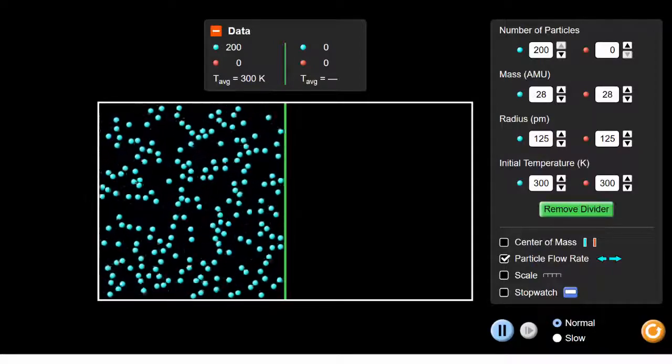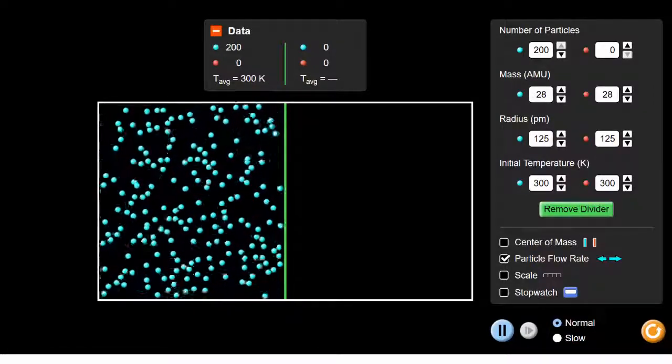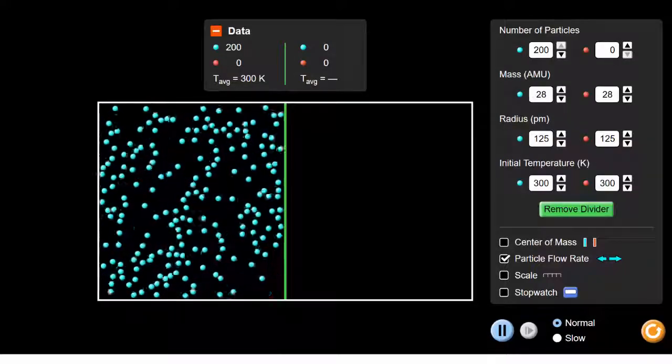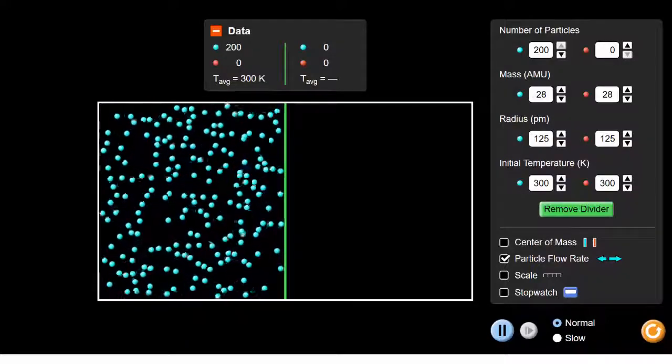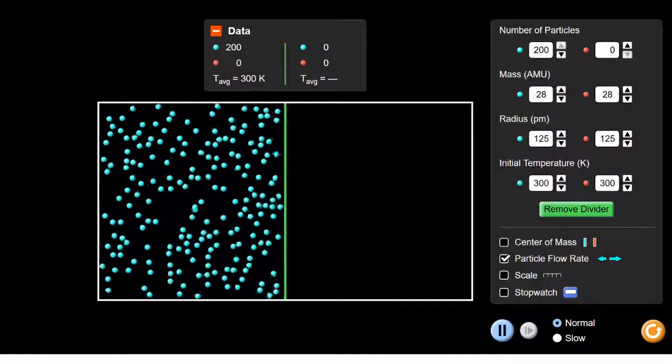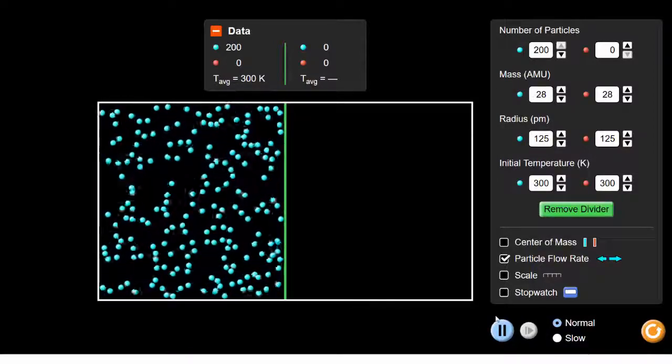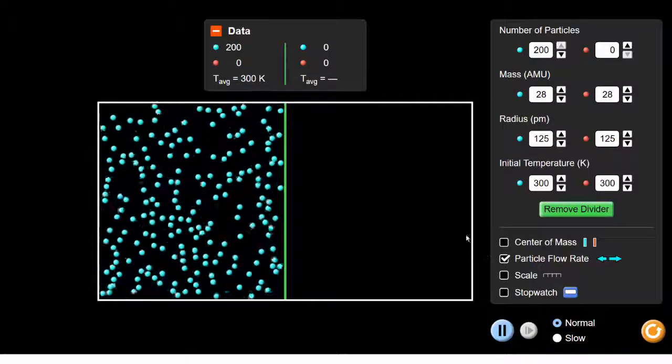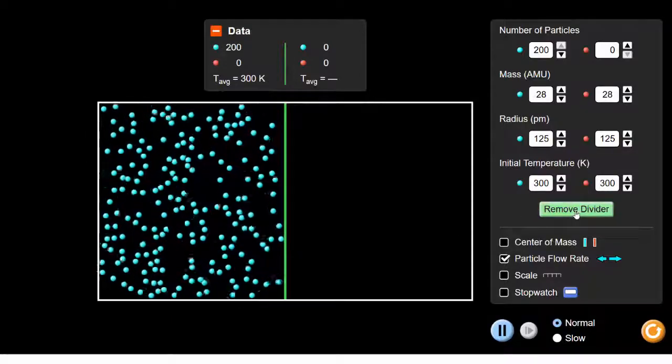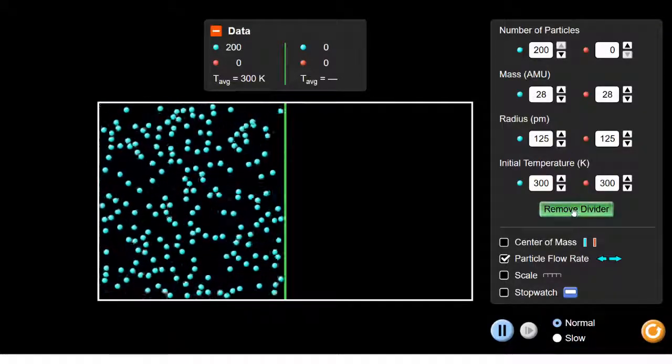When we remove the divider they're going to continue this behavior, but each particle will now have the chance to randomly make its way, through collisions, into the other half of the container. The arrows at the bottom are going to show the flow of particles from one side of the container to the other. Let's remove the divider.